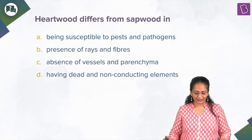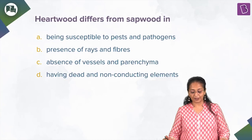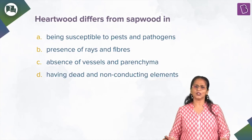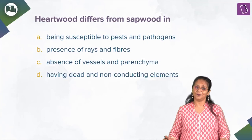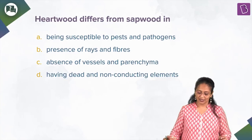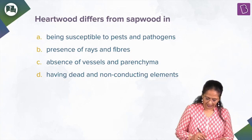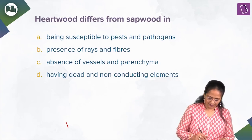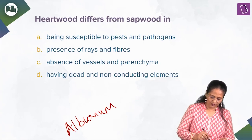Now let's look at this question: heartwood differs from sapwood. What is heartwood? Heartwood is the dark-colored wood, whereas sapwood is the light-colored wood. Sapwood is also called alburnum, and heartwood is also called duramen.